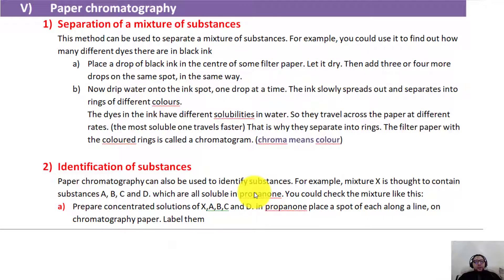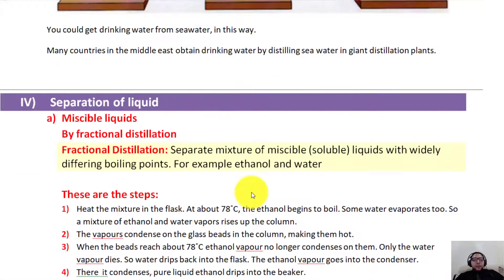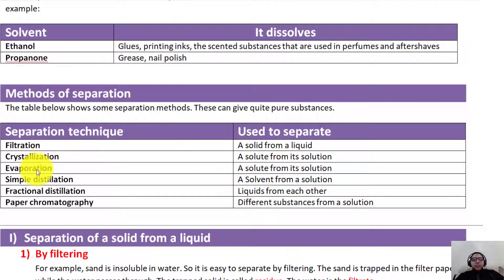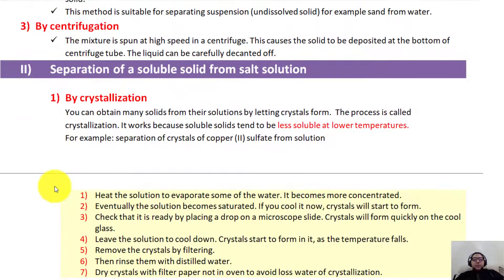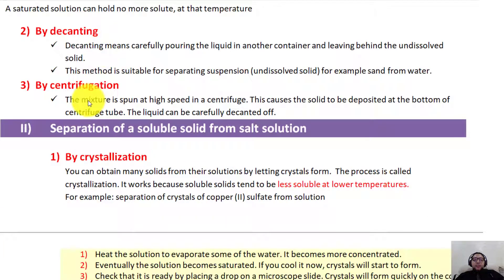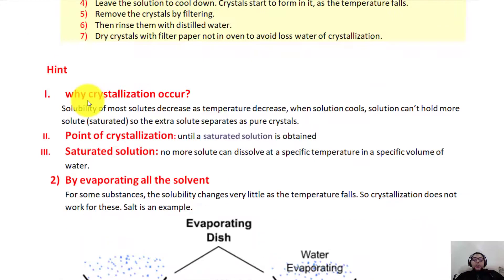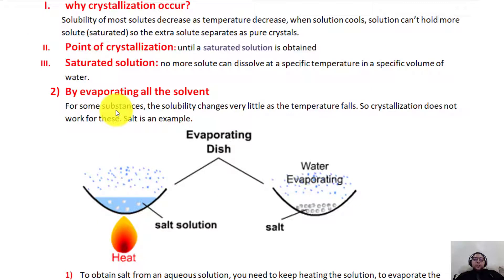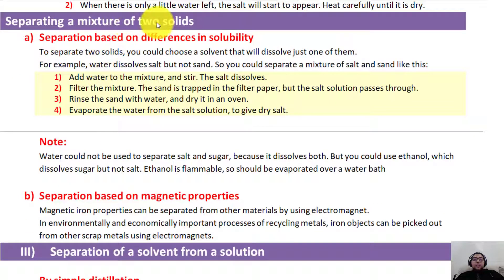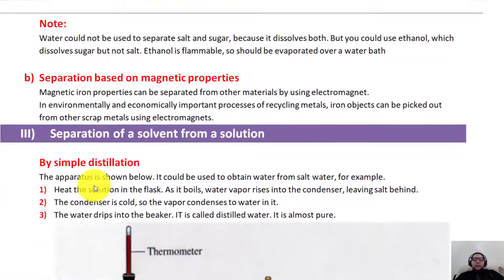Hello everybody, this is Mr. Shaban. Today we're going to finish the unit of separation techniques with chromatography. In the previous lessons we spoke about different ways to separate mixtures: filtration, crystallization, evaporation. Filtration is used to separate an insoluble solid from a liquid; decanting and centrifusion do the same, while crystallization and evaporation are used to separate a soluble solid from water or liquid.